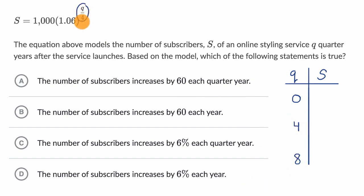So when q equals zero, this is going to be 1.06 to the zeroth power, which is just one. So we have 1,000 subscribers. You could view that as the initial amount of subscribers.